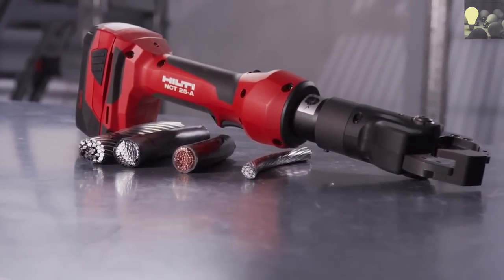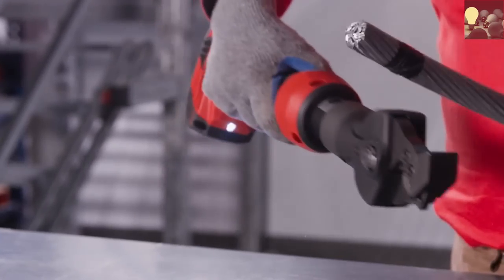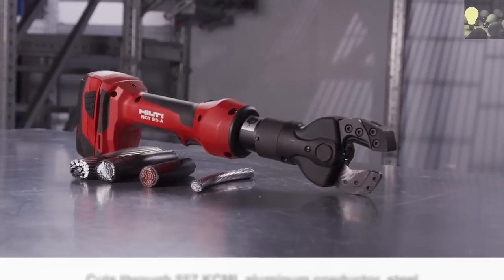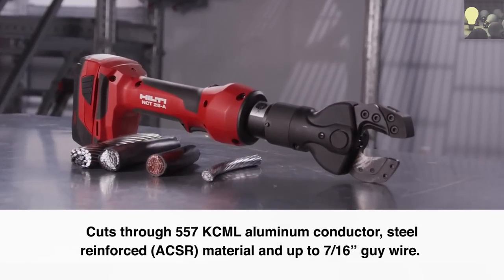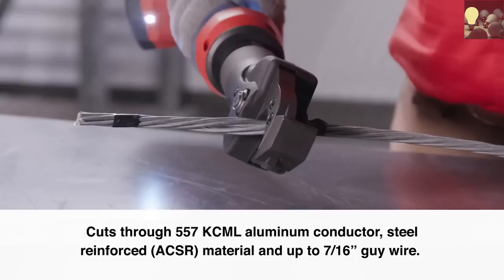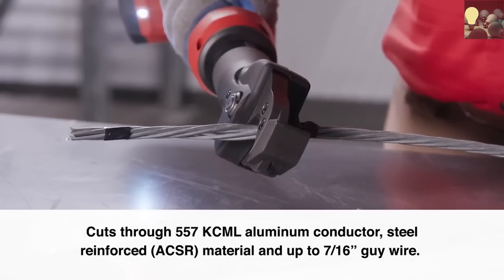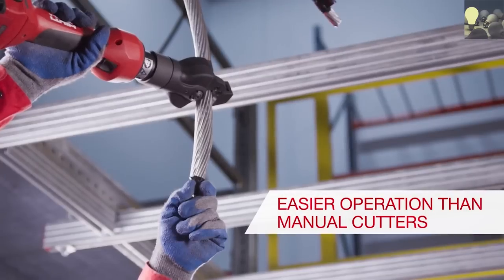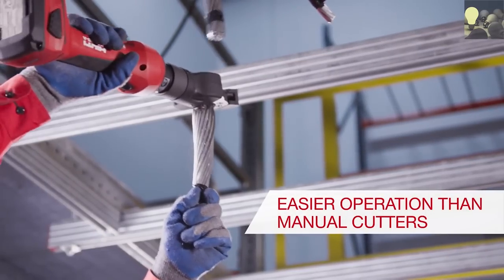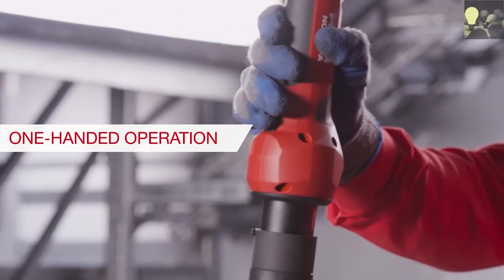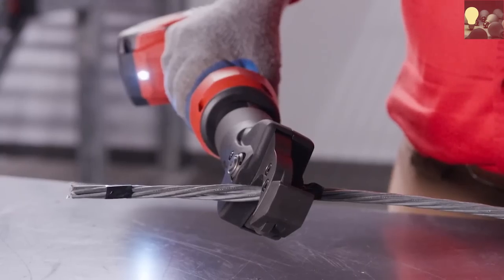Utility professionals have an automatic option for cutting through power-conducting wires. Hilti's NCT25A ACSR cutter makes quick work of slicing through aluminum conductor steel-reinforced ACSR wire and up to 7/16 inch guy wire. The NCT25 can be used with just one hand. Pull the power switch and let the tool do the work.